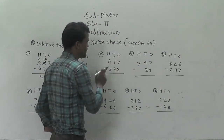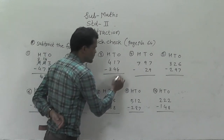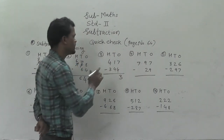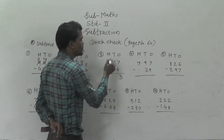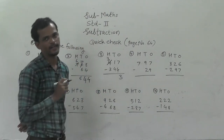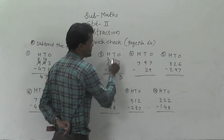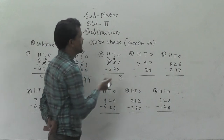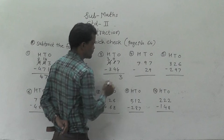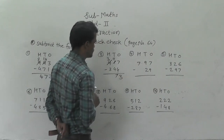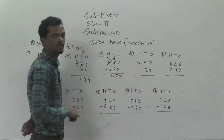Next example: 417 minus 344. 7 minus 4 is 3. Then 1 minus 4 — not possible. So regroup this 4 hundreds into 3 hundreds and 10 tens, and that 10 tens add into this 1 ten, so here 11 tens are there. 11 minus 4 is 7, then 3 minus 3 is 0. So 73 is the answer.